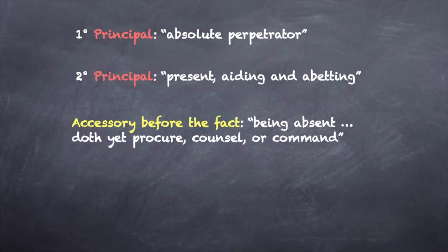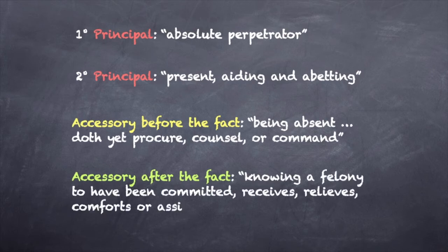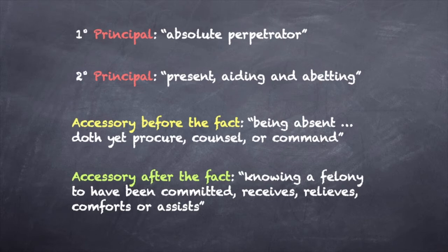Blackstone also defined a fourth category: accessory after the fact, who, knowing a felony to have been committed, receives, relieves, comforts, or assists the principal. Mere accessories after the fact are not liable as accomplices to the principal's offense. They are liable for a separate offense that is variously defined. Our focus will be on the first three categories.